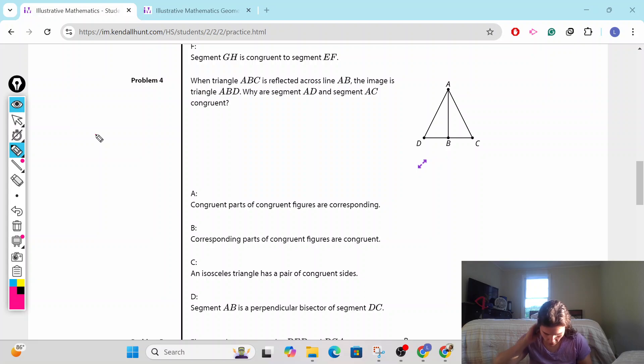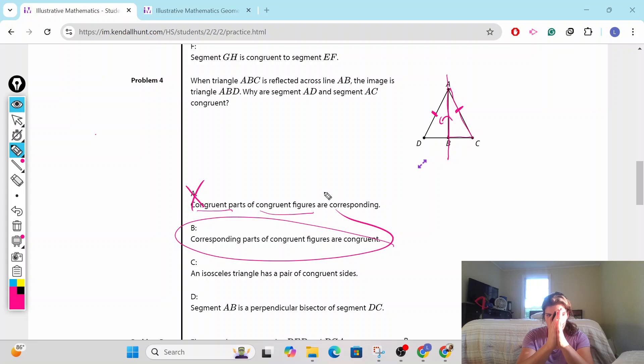Problem number four. When triangle ABC is reflected across line AB, so we have ABC was reflected across line AB, the image is triangle ABD. Why are segments AD and segments AC congruent? AD and AC. Why are they congruent? Well it's a reflection. Corresponding parts of congruent figures are congruent. AD and AC are corresponding parts of congruent figures. We know they're congruent because it's a reflection, so therefore they're congruent.